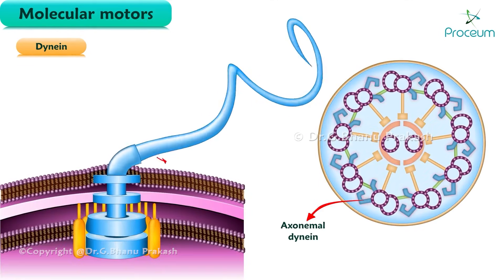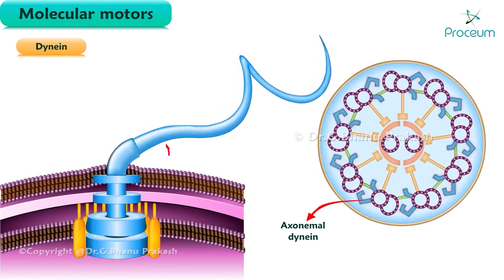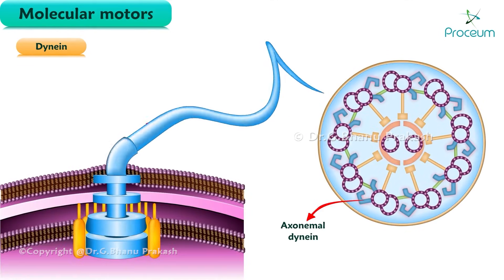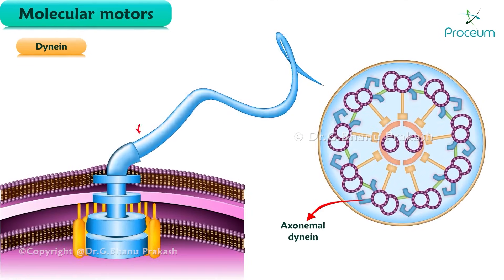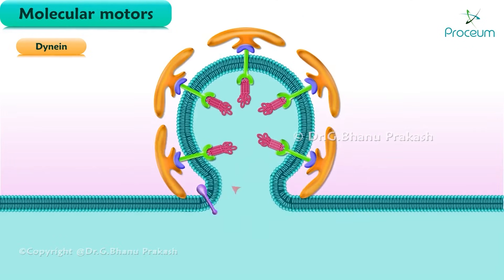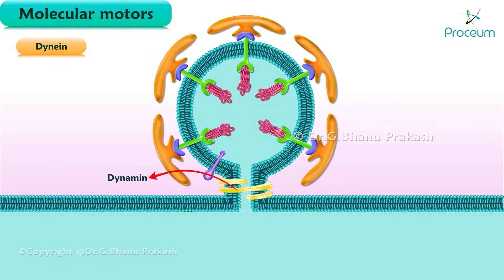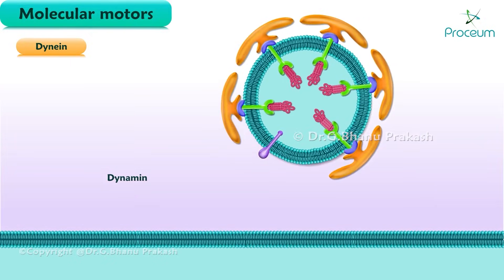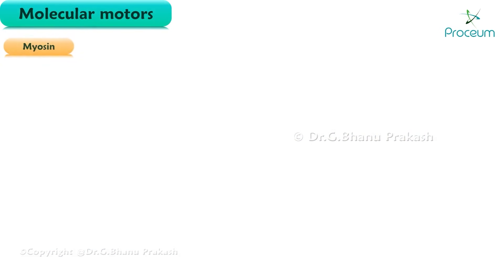There is also axonemal dynion, which powers ciliary and flagellar movement. Then there is dynamin. Dynamin uses GTP and is involved in endocytosis.